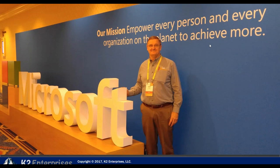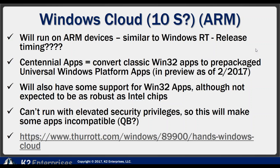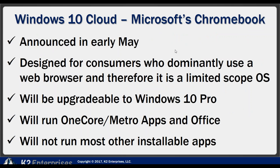Microsoft is making some big changes that will affect your budget and decisions. In early May, they introduced their new Windows Cloud operating system. Our rule of thumb is that for business purposes, you should just ignore this — it's designed to run on low-powered ARM devices and used in schools to compete against Chromebooks. It's much more of a consumer operating system. Some interesting things include the support of OneCore and Metro apps, which we'll see in the third quarter when Windows 10 is updated with the Redstone 3 release.